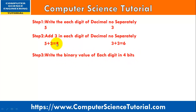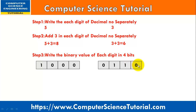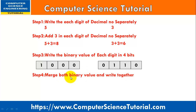Step 3: write the binary value of each digit in 4 bits. We have to convert 8 and 6 into binary values, using a maximum of 4 bits. The binary value of 8 is 1000. Similarly, the binary value of 6 is 0110.